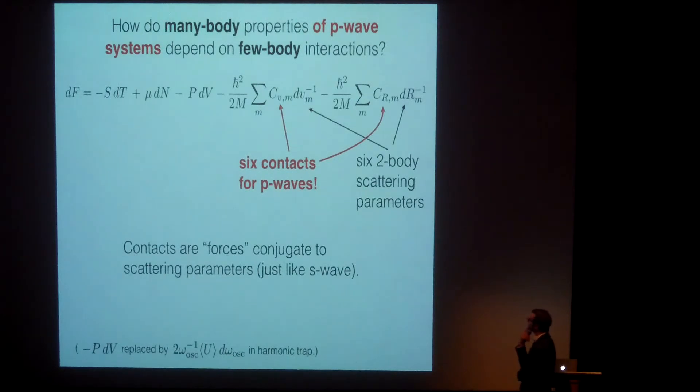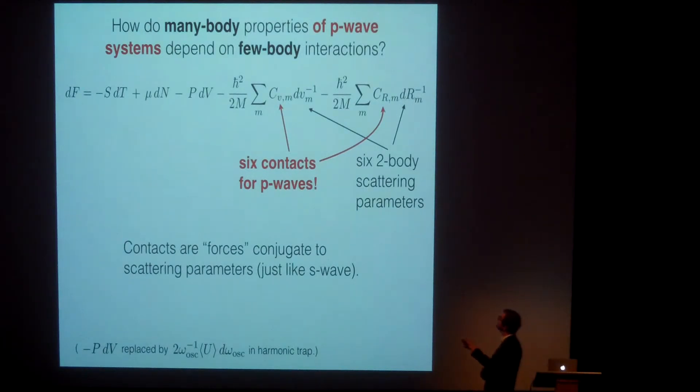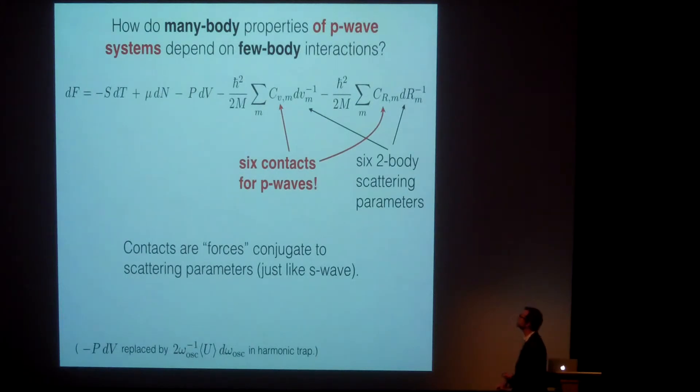It turns out that what we were seeing was the P-wave contact, but the theory has to be elaborated because now we have two parameters we can vary. So thermodynamics would tell us that every time you have a parameter you can change, then it has a conjugate, kind of like volume to pressure, except now we have two different volume-like things, so we have two different new pressure-like thermodynamic conjugates. In each of those, we can now call a contact, and I call this C_V because it's conjugate to the volume, the other one is C_R conjugate to this length. And then there are also three projections that an L equals one collision can have, so there are three M's for L equals one.